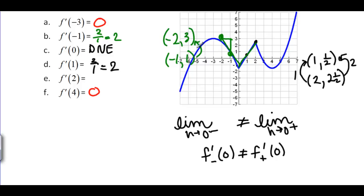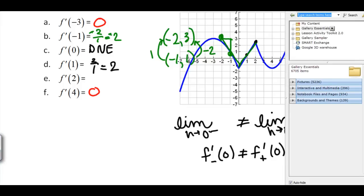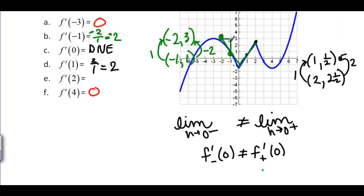The change in y here is 1 minus 3 is a negative 2 and negative 1 minus negative 2 is a positive 1. So we should have had negative 2 over 1, which is negative 2 actually at negative 1. And that makes sense because as you can see here this tangent line is going downhill and should have a negative slope.